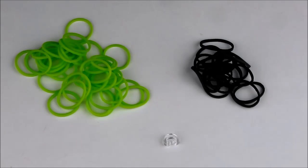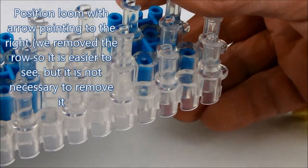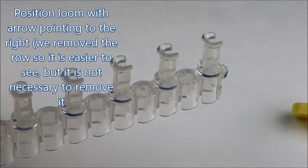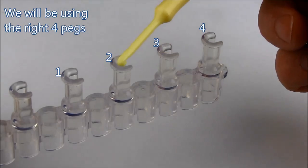Position the loom so that the arrows are pointing to the left. And for video demonstration purposes we will remove the one column of pegs. We will be using pegs 1, 2, 3 and 4.